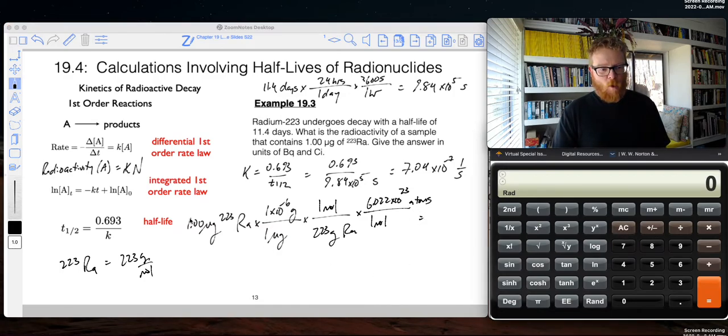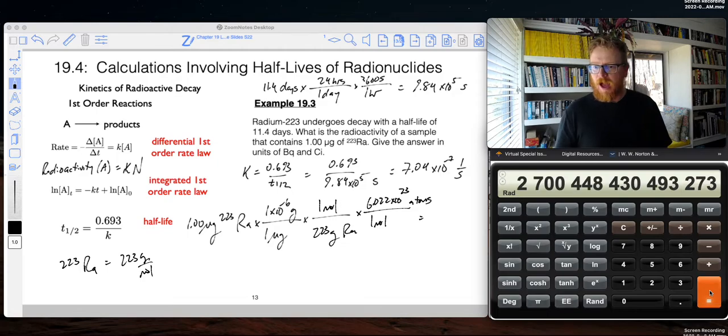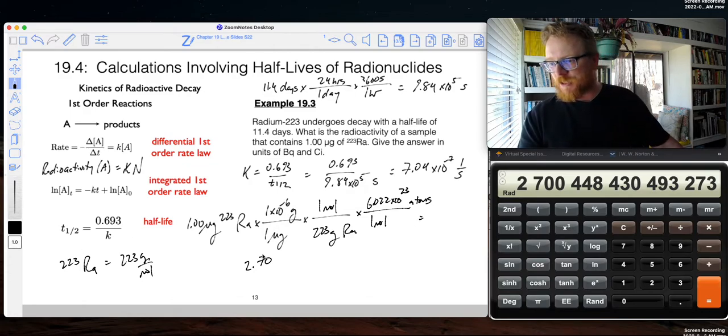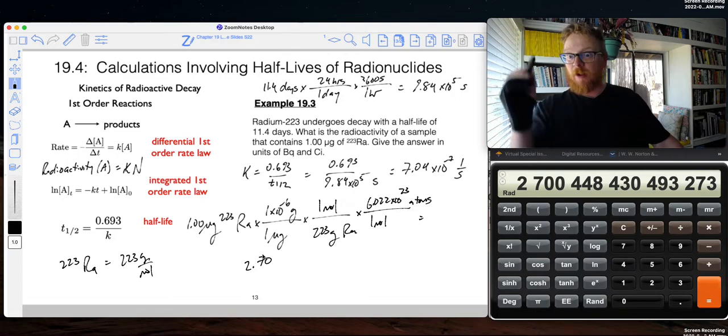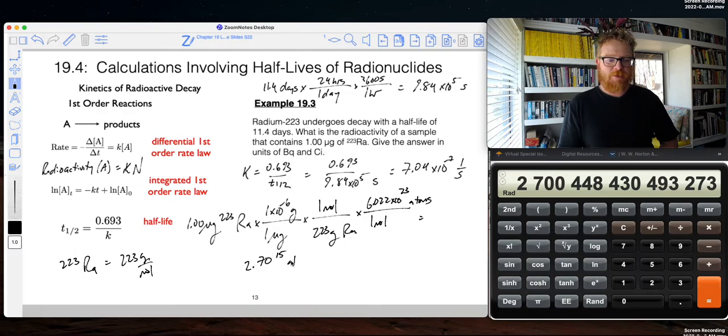That's going to be 1 divided by 1 times 10 to the minus 6. So, we'll say 1 E 6 minus. And then, now that's going to be times Avogadro's number, 6.022 E to the 23, and then divided by the mass, 223. I get a large number of atoms. Why didn't they give me that in scientific notation? Okay, I had to count just to make sure. 2.70 times 10 to the 15 atoms.